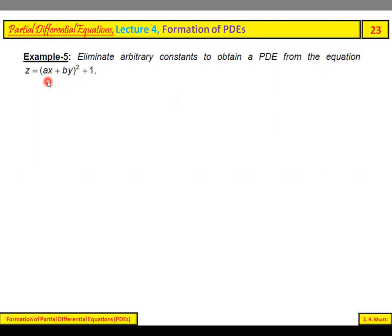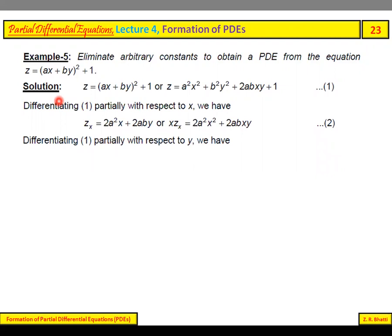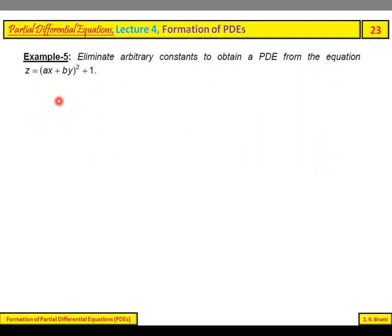In this equation, you can see that there are two arbitrary constants, a and b, and there are also two independent variables. We discussed in the previous lecture that if the number of independent variables and the number of arbitrary constants are equal, then a first-order differential equation is formed.